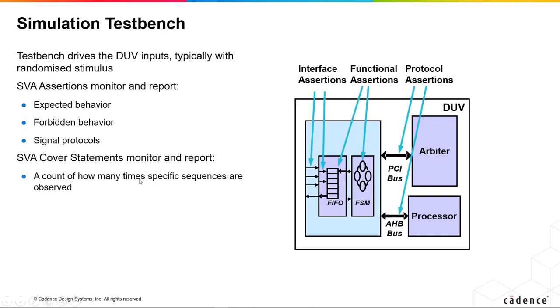And the covers are there to monitor and report how many times a specific sequence was seen. For example, did my state machine make an arc through state one, state three, and state seven? How many times did that happen? Because that represents functionally something important.